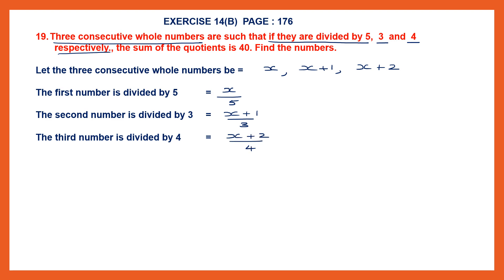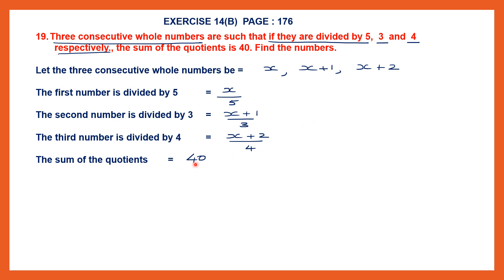So we have three consecutive whole numbers: x, x plus 1, and x plus 2, divided by 5, 3 and 4 respectively. We are told the sum of the quotients is 40. That means when you add the quotient of each division, you get 40. So x over 5 plus this plus this will give us 40.